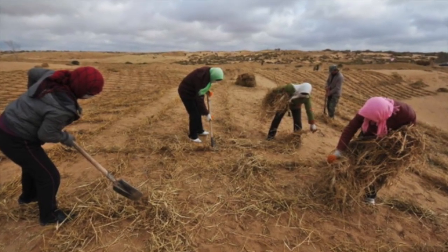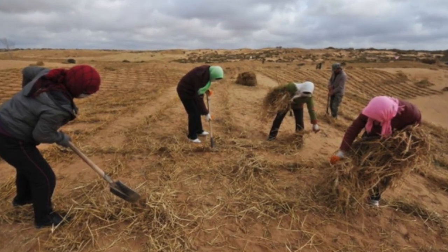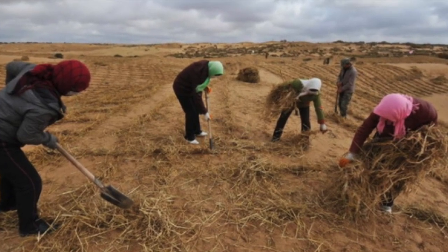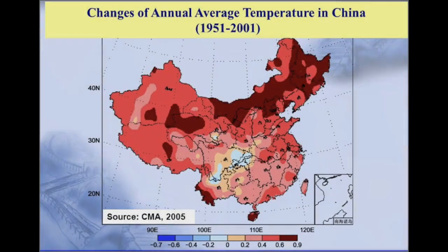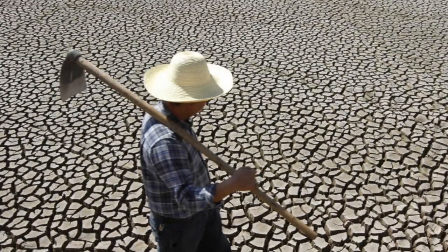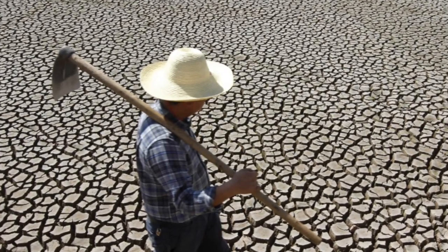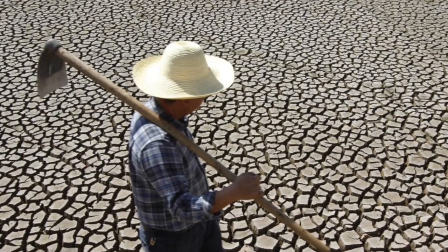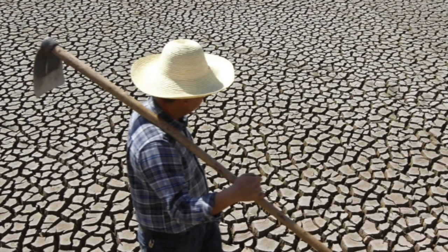Another major cause of desertification is the growing problem of climate change. With temperatures in China increasing and average precipitation decreasing, devastating droughts are causing the land to become increasingly dry and unfertile. Overuse of the soil and failure to rotate crops in many fields across rural China has led to extreme soil degradation.